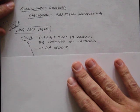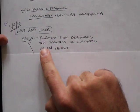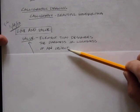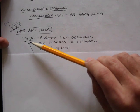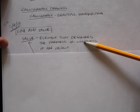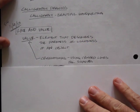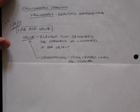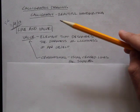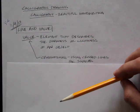Value is an element that describes the darkness or the lightness of an object. When it's dark, we say it has more value. When it's light, it has less value.